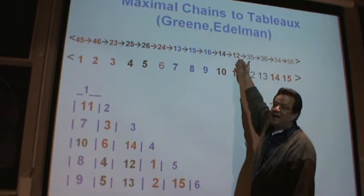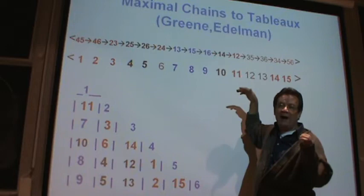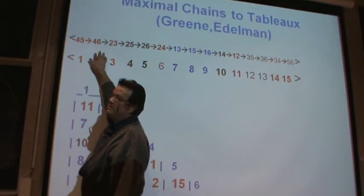And we are going to assign to each of these numbers the step at which that flip happens. So this is step number one, this is step number two, this is step number three, etc. Is this clear?